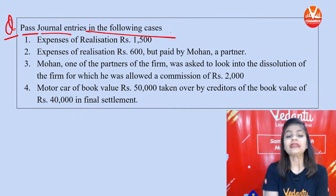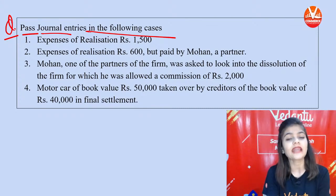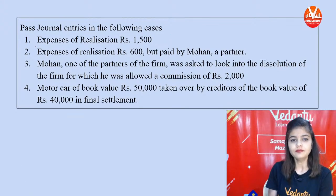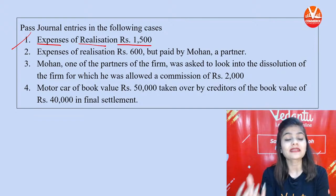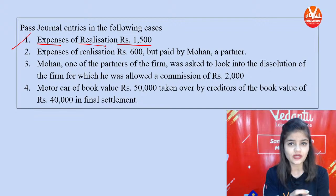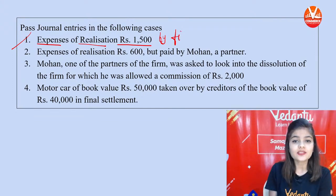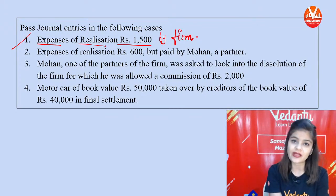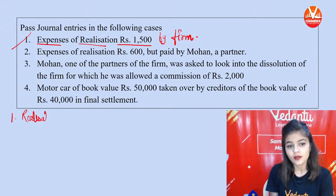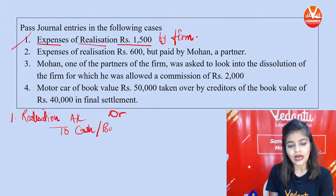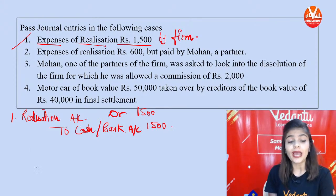Question 1: Pass journal entries in the following cases. First transaction — expenses of realization ₹1500. It is not mentioned who paid these expenses, so by default we assume they are paid by the firm. The journal entry will be: Realization Account Debit, To Cash or Bank Account, ₹1500.